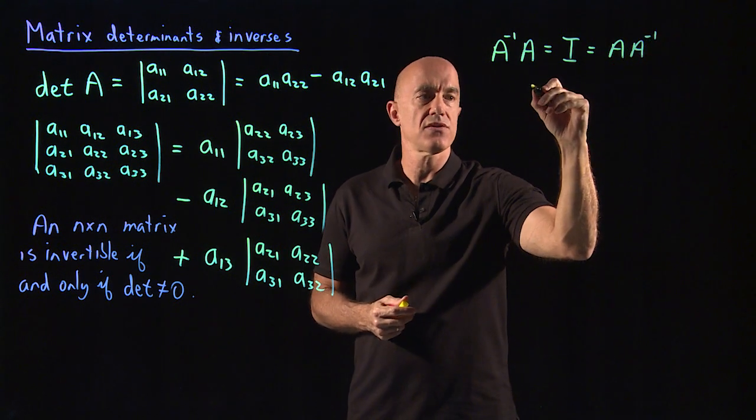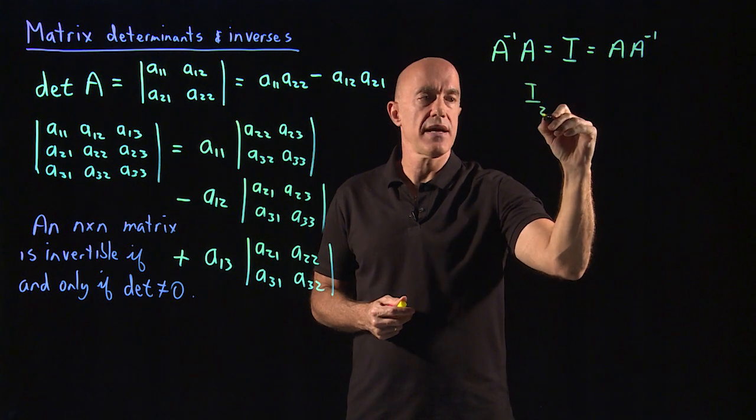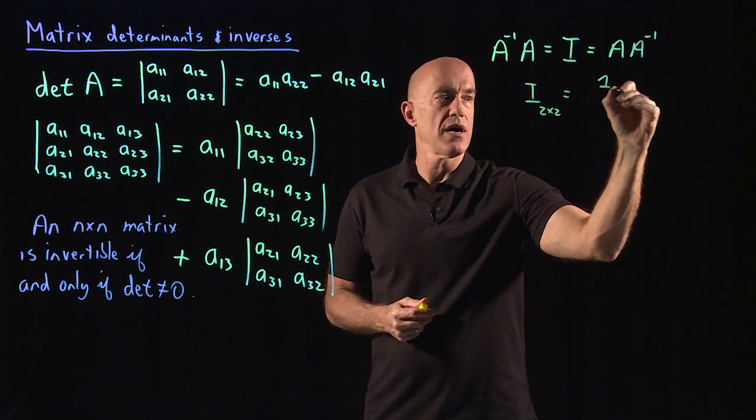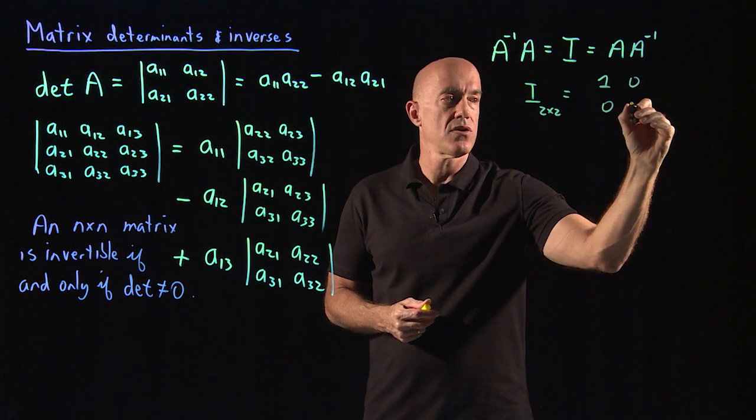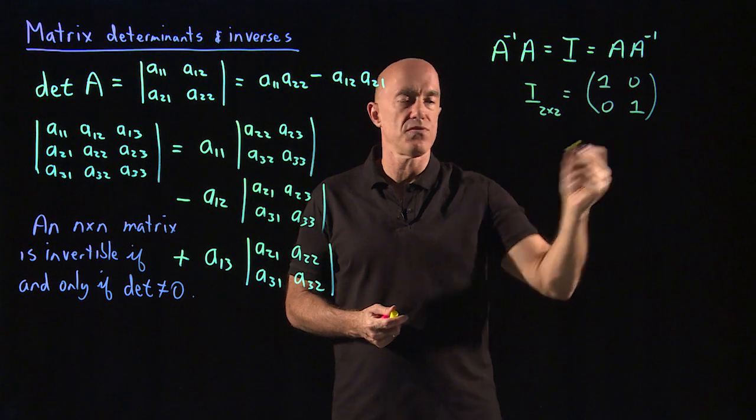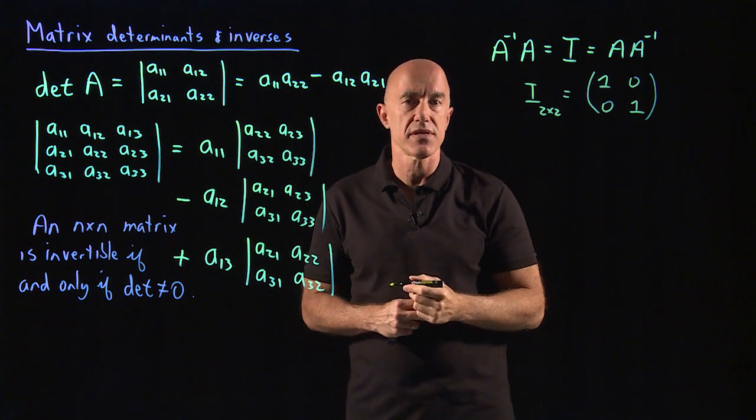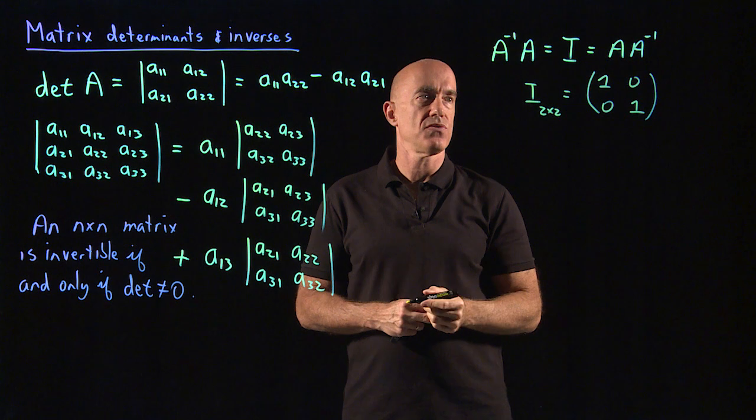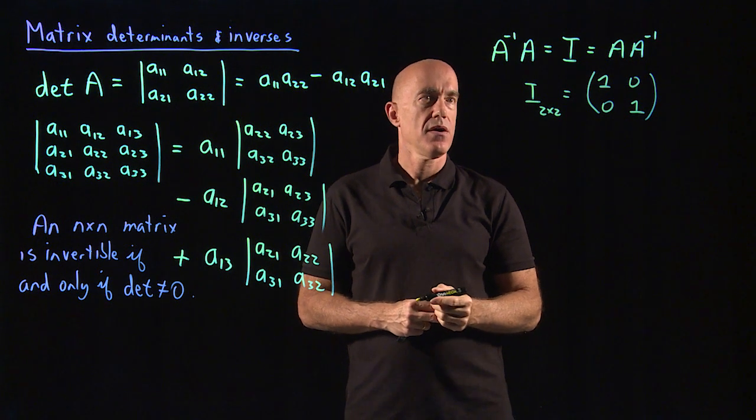For two by two, the identity matrix for two by two looks like one, zero, zero, one. If you multiply any two by two matrix by the identity matrix, you get back that two by two matrix.